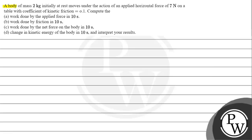Let's read the given question. The question says: a body of mass 2 kg initially at rest moves under the action of an applied force of 7 Newton on a table with coefficient of kinetic friction as 0.1. We need to compute: (a) work done by the applied force in 10 seconds, (b) work done by friction in 10 seconds, (c) work done by net force on the body in 10 seconds, (d) change in kinetic energy of the body in 10 seconds, and we need to interpret our results.